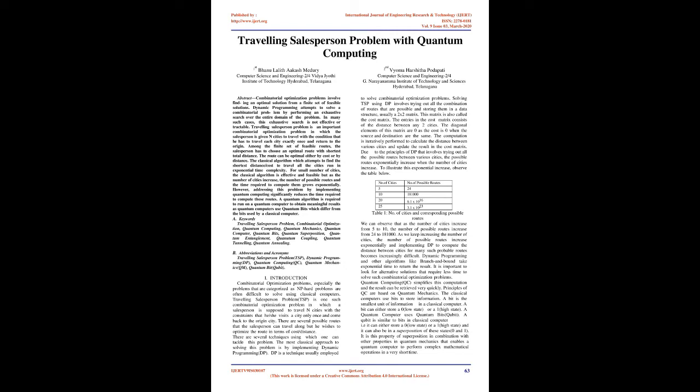Introduction: Combinatorial optimization problems, especially the problems that are categorized as NP-hard problems, are often difficult to solve using classical computers. The Traveling Salesperson Problem, TSP, is one such combinatorial optimization problem in which a salesperson is supposed to travel n cities with the constraints that he or she visits a city only once and comes back to the origin city. There are several possible routes that the salesperson can travel along, but he wishes to optimize the route in terms of cost or distance. The most classical approach to solving this problem is by implementing Dynamic Programming, DP.